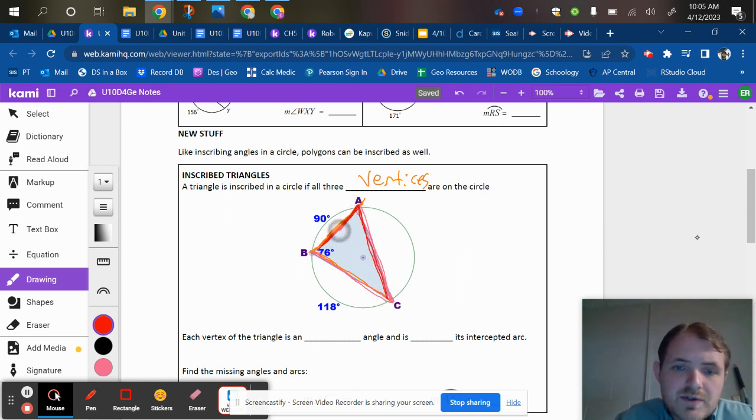Okay, so all those create inscribed angles, which is pretty interesting. And if you did the warm up a second ago, you remembered that half of an arc is the inscribed angle that goes through it.